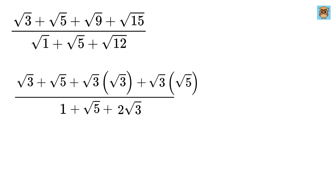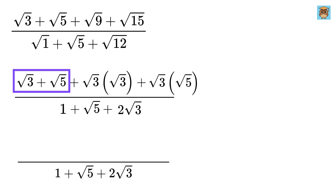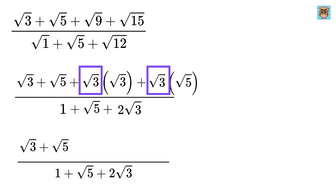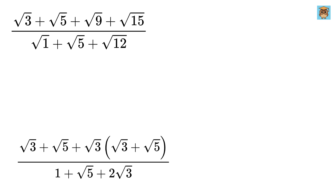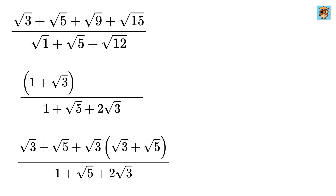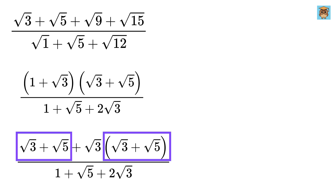Next, we observe that the numerator contains terms that can be grouped. The terms square root of 3 plus square root of 5 remain the same, while from this part we can take square root of 3 as common to get square root of 3 times the quantity square root of 3 plus square root of 5. The numerator then factors out as 1 plus square root of 3, times the quantity square root of 3 plus square root of 5.